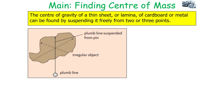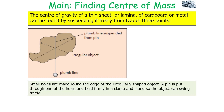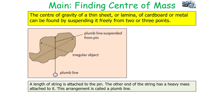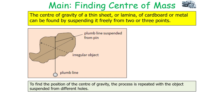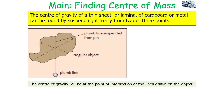The centre of gravity of a thin sheet or lamina of cardboard or metal can be found by suspending it freely from two or three points. Small holes are made around the edges of the irregular shaped object; a pin is put through one hole and held in a clamp and stand so the object can swing freely. A length of string attached to the pin with a heavy mass at the other end forms a plumb line. The object will stop swinging when its centre of gravity is vertically below the point of suspension, and a line is drawn along the plumb line. The process is repeated from different holes, and the centre of gravity is at the point of intersection of the lines drawn.